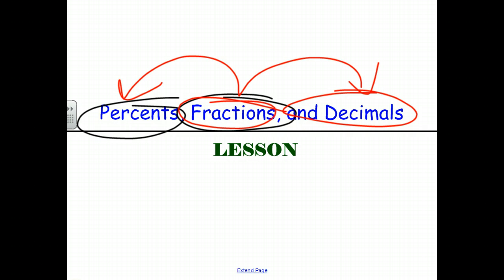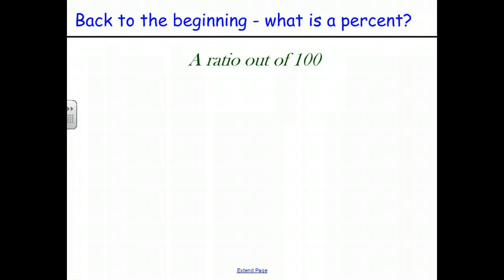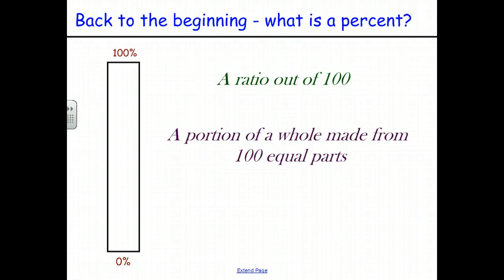Let's go back to the beginning and think about what a percent is. We started by saying that a percent is a ratio out of 100. In the fraction form of that ratio, the denominator is 100; in the colon form, the second number is 100. That is one half of what we need to see the relationship between a percent and a fraction.